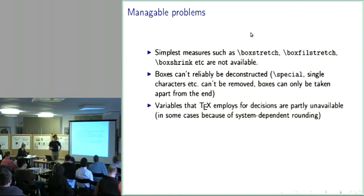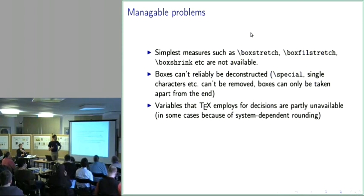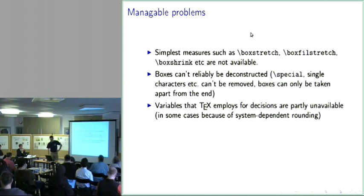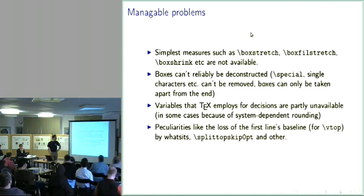Variables that TeX employs for decisions are partly just not there. If you look at the total demerits when doing paragraph breaking, TeX makes the decisions and doesn't tell you about them. In some cases, results of those decisions were explicitly ruled out by Knuth because he said he doesn't want users to be able to guess from within TeX how it did certain rounding operations in the floating point arithmetic used in very few places in TeX.